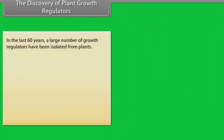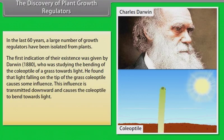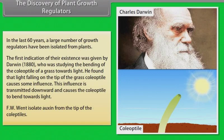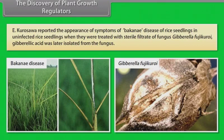The discovery of plant growth regulators. In the last 60 years, a large number of growth regulators have been isolated from plants. The first indication of their existence was given by Darwin, 1880, who was studying the bending of the coleoptile of a grass towards light. He found that the light falling on the tip of the grass coleoptile causes some influence. This influence is transmitted downward and causes the coleoptile to bend towards light. F.W. Went isolated auxin from the tip of the coleoptiles. E. Kurosawa reported the appearance of symptoms of bakanae disease of rice seedlings in uninfected rice seedlings when they were treated with sterile filtrate of fungus Gibberella fujikuroi. Gibberellic acid was later isolated from the fungus.